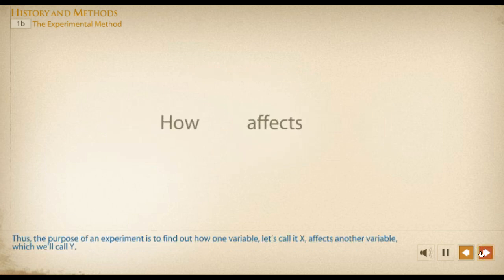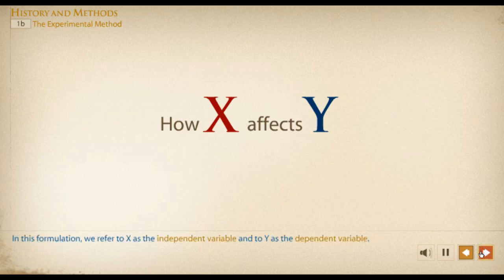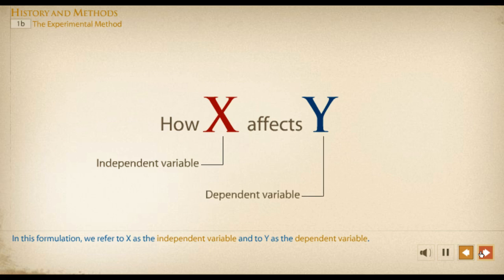The purpose of an experiment is to find out how one variable, let's call it X, affects another variable, which we'll call Y. In this formulation, we refer to X as the independent variable and to Y as the dependent variable.